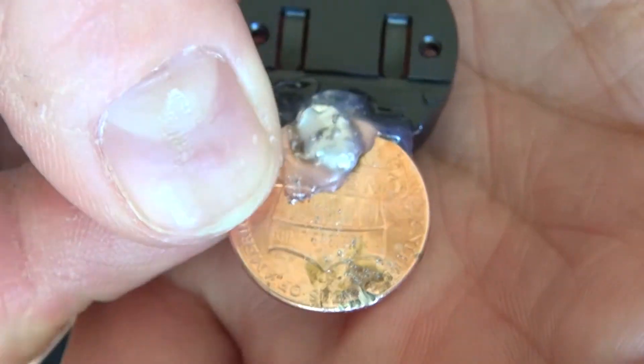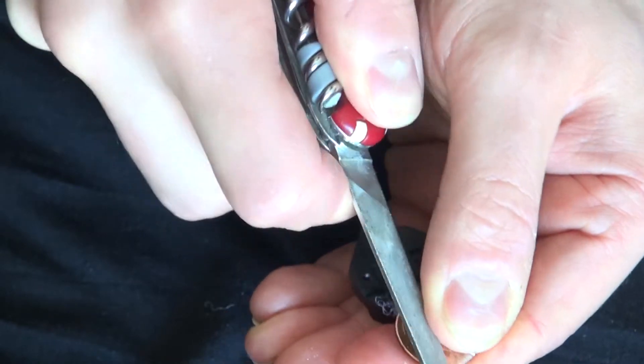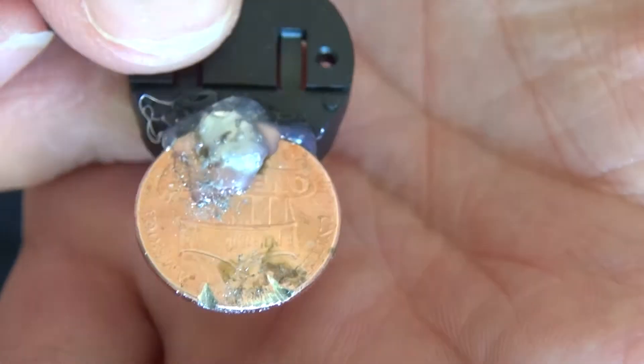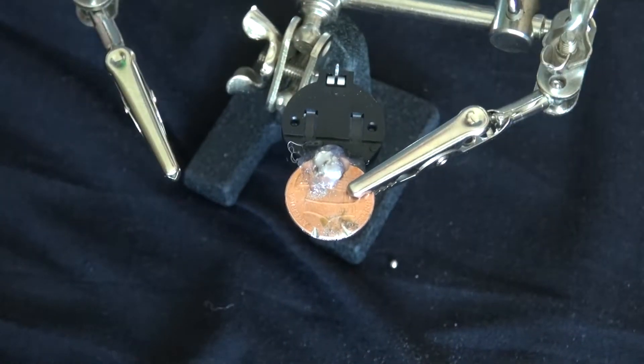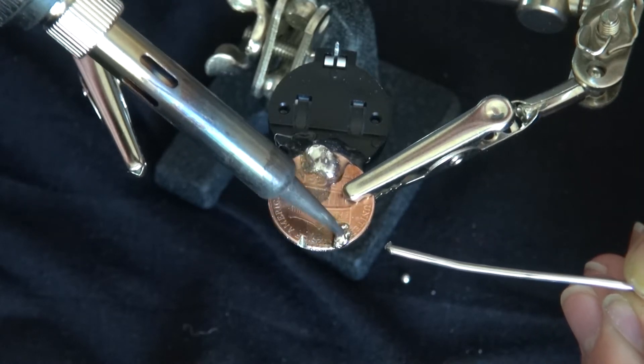So now what I'm doing is I'm getting my pocket knife and I'm going to shave off the penny a little bit to expose the zinc so that way the solder will solder to the zinc a little bit easier and better. There we go.